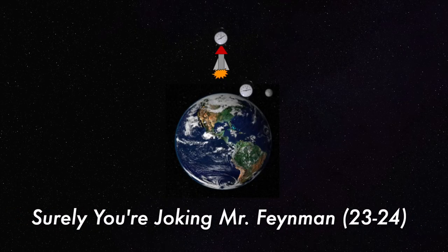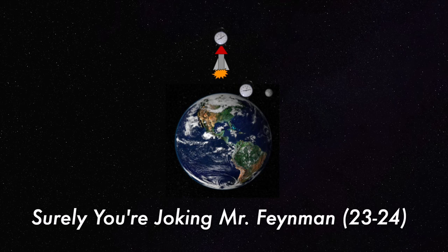You blast off in a rocket, which has a clock on board, and there's a clock on the ground. The idea is you have to be back when the clock on the ground says one hour has passed. Now you want it so that when you come back, your clock is as far ahead as possible.